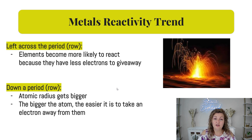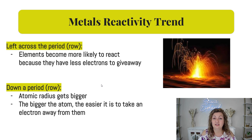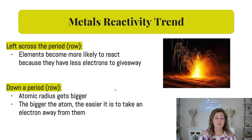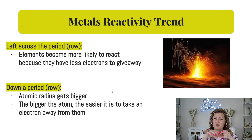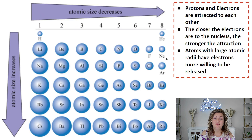Metal reactivity trends: when we're talking just about metals, as we go across the period to the left — that's the row — elements become more likely to react because they have fewer electrons to give away. As we go down a period, the atomic radius gets larger, so we start getting bigger atoms. The bigger the atom, the easier it is to take away an electron from them, because the electrons are farther away from the positive protons in the nucleus — so they can kind of be snatched up a lot easier. In the size diagram, you can see that in the upper right-hand corner we have the very smallest elements, and going diagonally to the bottom left we have the very largest atoms.